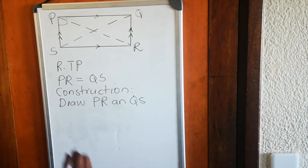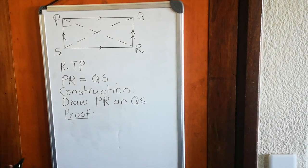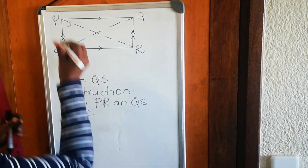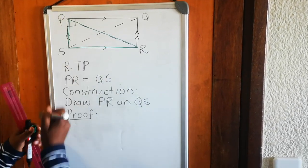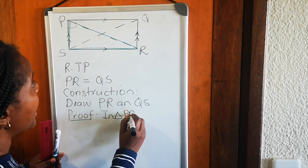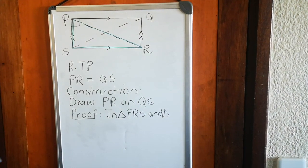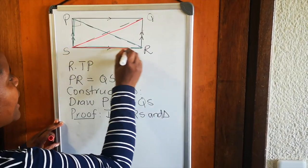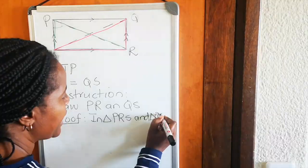The third part is to do the proof. We said we're going to use congruency to prove this theorem. With congruency, we have two triangles. We're going to use triangle PRS and triangle QSR.